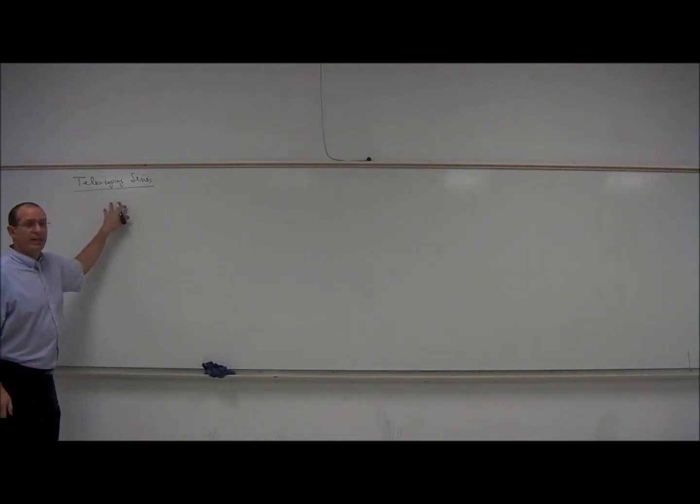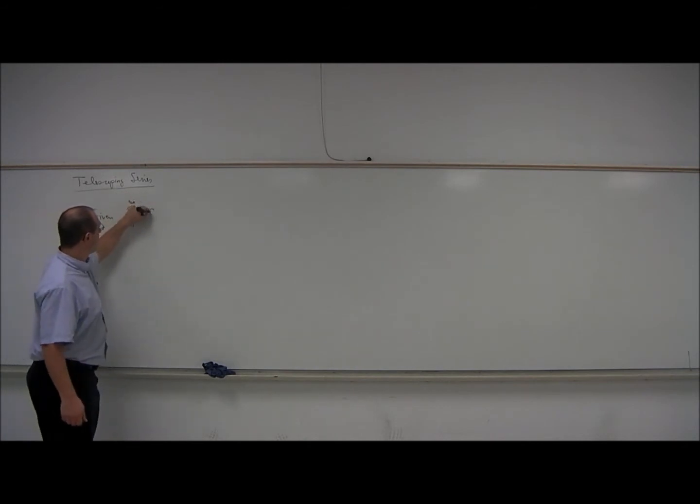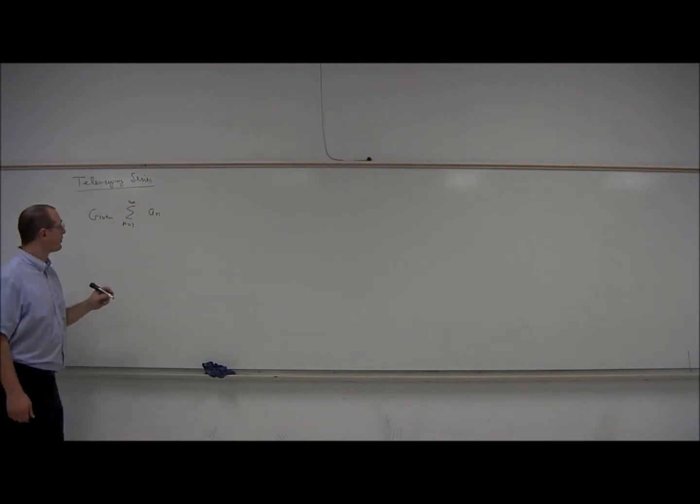Before we get into an example that illustrates this telescoping property, let's just suppose we have a series summation n equals 1 to infinity of a sub n. Then what this symbol means, the summation from 1 to infinity - what does that mean? We have infinitely many numbers to add up. So to give that meaning, we use the concept of a limit.